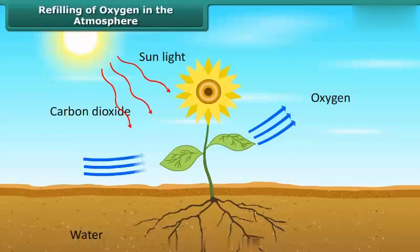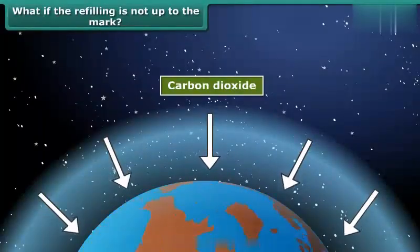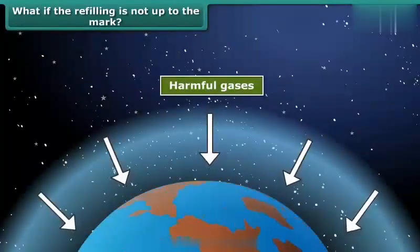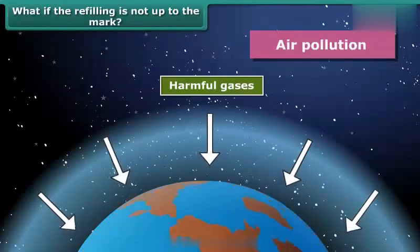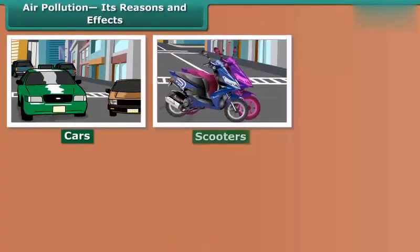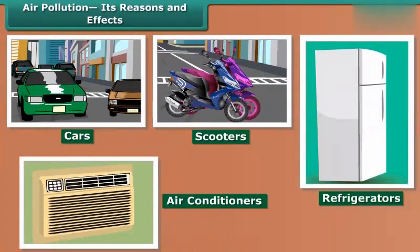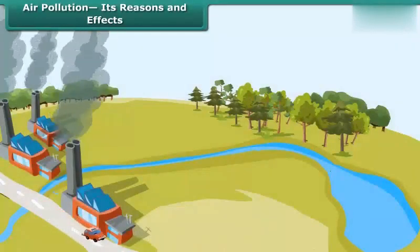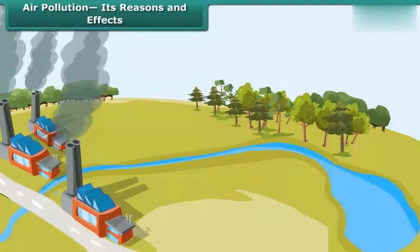What if carbon dioxide is pumped more into the atmosphere beyond the capacity of plants to maintain the carbon dioxide-oxygen balance? What if other harmful gases are released in the atmosphere? The answer is: it results in air pollution. Cars, scooters, air conditioners, refrigerators, and many other things release harmful gases that pollute air. The enormous amount of carbon dioxide formed during burning of coal also pollutes air. The substances that cause air pollution are called pollutants — mainly gases discharged from industry and motor vehicles.